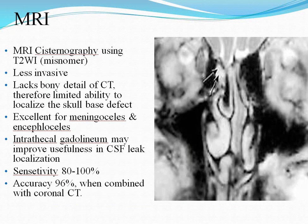MRI cisternography uses T2-weighted imaging. It is less invasive but lacks the bony details of CT, with limited ability to detect or localize skull base defects. It is excellent for meningoceles or encephaloceles; intrathecal gadolinium may improve usefulness in CSF localization. Sensitivity is 80–100%, accuracy 96% when combined with coronal CT.